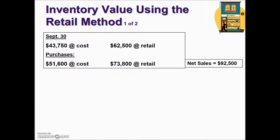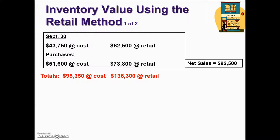Let's take a look at an actual problem. We have a beginning inventory on September 30th and an additional purchase, where we have our costs. Adjacent to the costs of the beginning inventory is the value of that inventory at retail — in other words, the selling price — and likewise for the additional purchases. During this period there was a net sales of $92,500. The first thing we want to do is find the total value at cost and the total value of our inventory at retail.